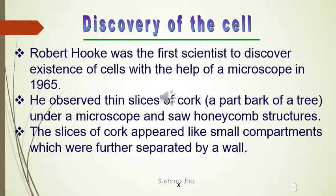In 1665, Robert Hooke was the first scientist to discover the existence of the cell with the help of a simple microscope. He observed the bark of a tree under his microscope and saw a small compartment-like appearance — a honeycomb structure separated by a thin wall in between. So he named it a cell. In Latin, cell means compartment.